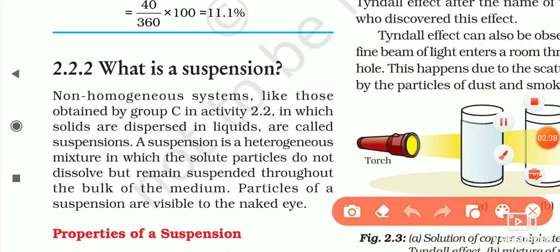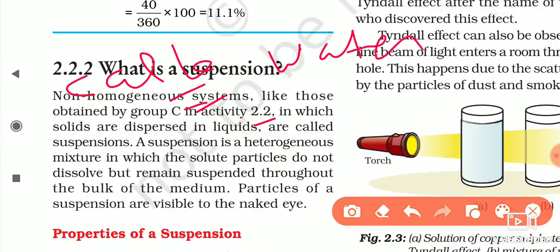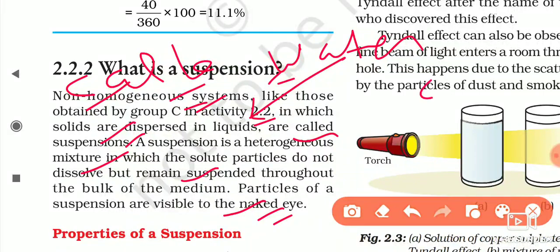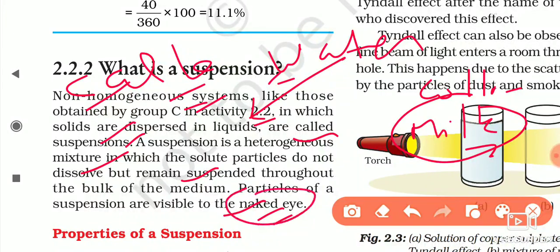Suspension is a non-homogeneous system like that obtained by group C in activity 2.2, in which solids are dispersed in liquid — chalk powder dispersed in water. Chalk is solid, water is liquid. It is a heterogeneous mixture in which the solid particles do not dissolve but remain suspended throughout the bulk of the medium. Particles of a suspension are visible to the naked eye. Here is the difference between suspension and colloid — for example, milk particles you cannot see with the naked eye, so milk is a colloid. Both are heterogeneous, but suspension particles are visible to the naked eye.